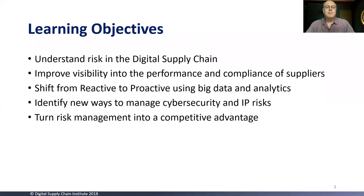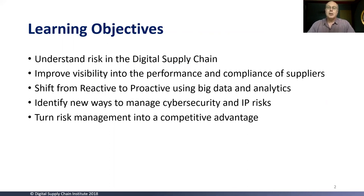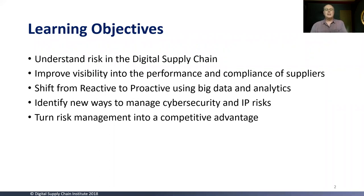The learning objectives for today are to help you understand risk in the digital supply chain: first, understanding what risk entails; second, looking at visibility as a specific issue and how improved visibility can address both performance and compliance of suppliers to reduce risk; third, shifting from reactive to proactive using big data and analytics; and fourth, examining the escalating risk around cybersecurity and loss of intellectual property — whether trade secrets or confidential information.